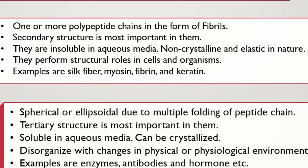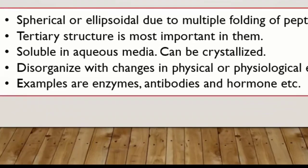Fibrous proteins کا major کام مختلف cells اور organisms میں structural roles perform کرنا ہے. ان کی examples میں silk fiber، myosin، fibrin اور keratin آتی ہیں. Silk fiber silk worm سے حاصل ہوتا ہے. Myosin ایک muscle protein ہے. Fibrin blood clotting میں help کرتی ہے، اور keratin nails اور hair وغیرہ میں present ہے.